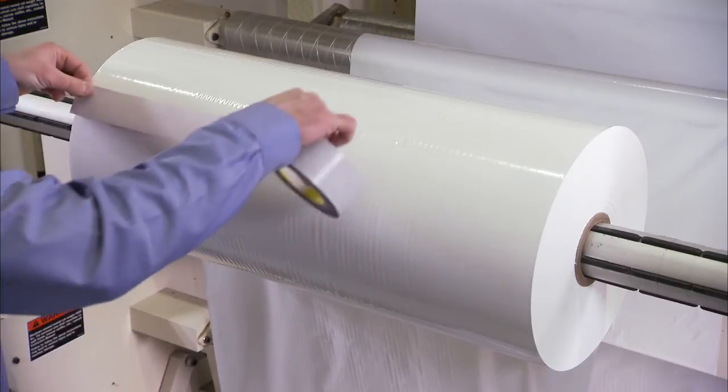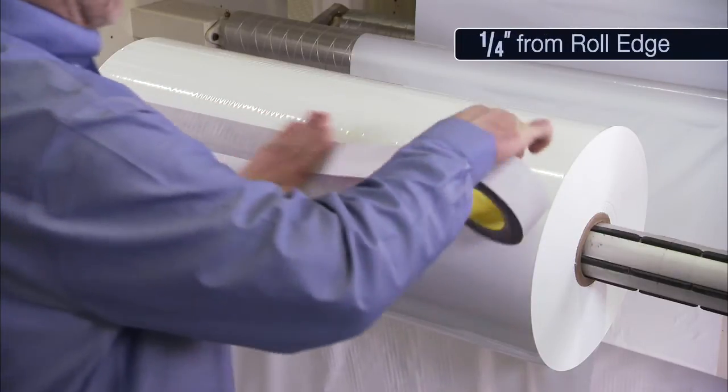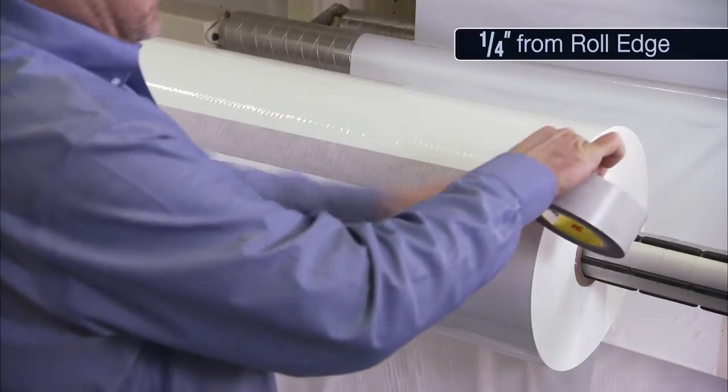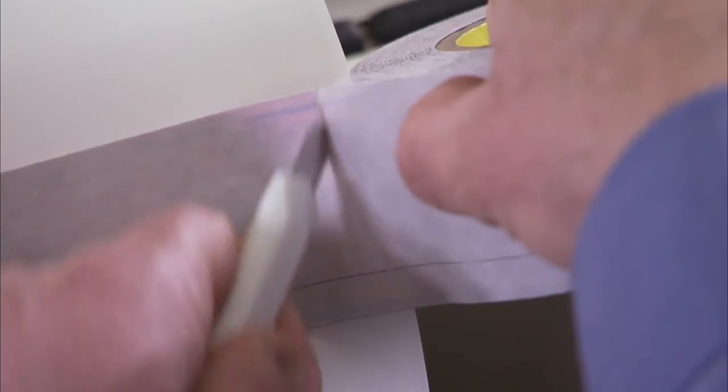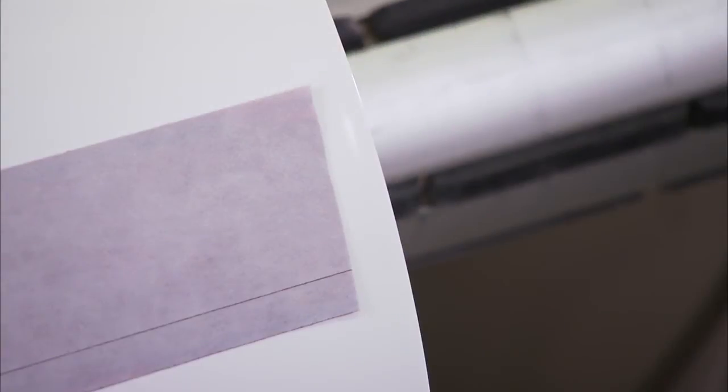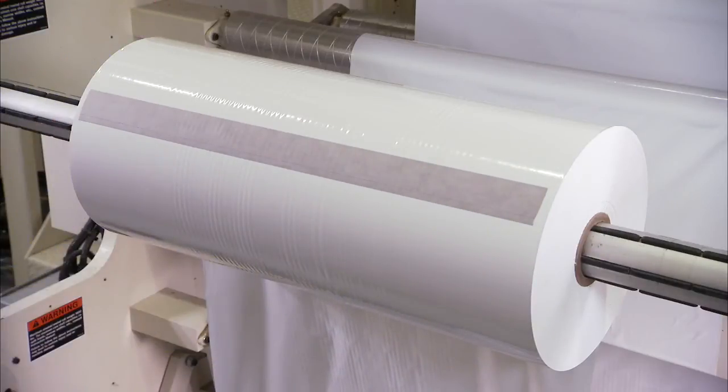Next, apply tape across the roll, starting and ending a quarter of an inch from the right and left edges. A blade will be needed to cut the tape. Rub down the tape across the width of the roll.